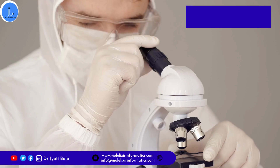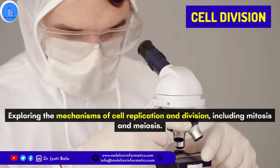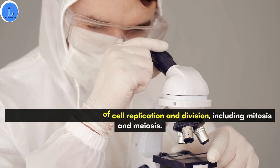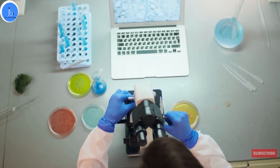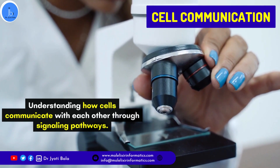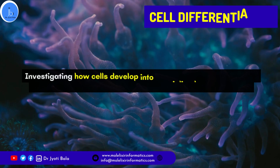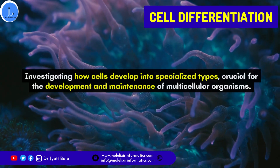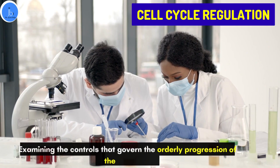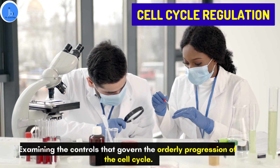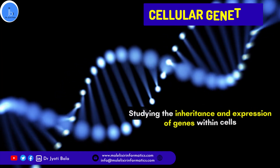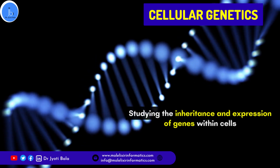Another sector to focus on is cell division — exploring the mechanisms of cell replication and division, including mitosis and meiosis. These studies play a very important role in understanding development and cancer research. The next scope is cell communication — understanding how cells communicate with each other through cell signaling. Next is cell differentiation — investigating how cells develop into specialized types, crucial for the development and maintenance of multicellular organisms. Along with these, significant areas include cell cycle regulation, examining the controls governing cell cycle progression, and cellular genetics — studying the inheritance and expression of genes within the cell.